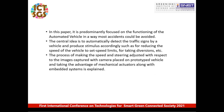In this paper, we predominantly focused on the functioning of an automated vehicle in a way that most accidents could be avoided. The central idea is to automatically detect the traffic signs by the vehicle and produce a stimulus accordingly, such as reducing the speed of the vehicle to set speed limits, taking diversions, and many other tasks. The process of making speed and steering adjusted with respect to images captured by a camera placed on the prototype vehicle, taking advantage of mechanical actuators along with embedded systems, is explained in this paper.